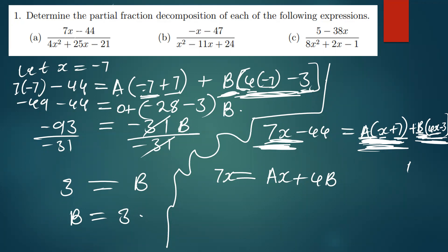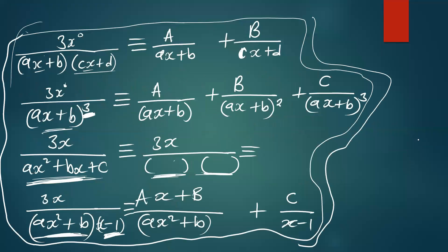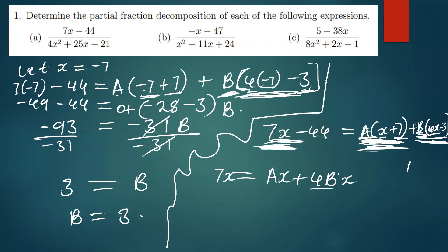We have b times 4x, we're getting 4bx. Then b times negative 3, b times negative 3 is not having x, so we leave it. Then what you can do is just divide by x on both sides, so that all the x here we cancel. We just remain with 7 is equal to a plus 4b.